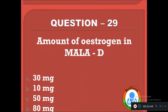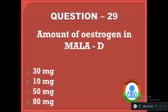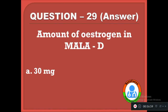Question 29: Amount of estrogen in Mala D — option A: 30 mcg, B: 10 mcg, C: 50 mcg, D: 80 mcg. The correct answer is A, the amount of estrogen present in Mala D is 30 mcg.